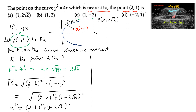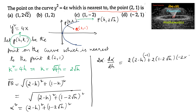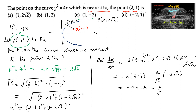Differentiating with respect to h to get the minimum value: for minimum length, the differentiation will be equal to 0. So 2α · (dα/dh) = 2(2 - h)·(-1) + 2(1 - 2√h)·(-2 · 1/(2√h)). This simplifies to -2(2 - h) - (2/√h)(1 - 2√h). Expanding: -4 + 2h - 2/√h + 4, and the -4 + 4 terms cancel.